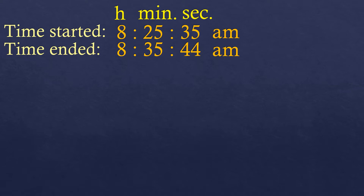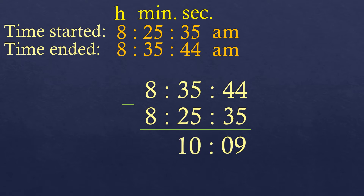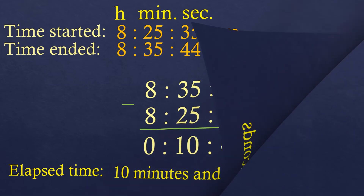To find the elapsed time, we subtract the time ended minus the time started. We write the time ended first and then below that the time started, and subtract from right to left — meaning from seconds to minutes to hours. So 44 minus 35 is 9, then 35 minus 25 is 10, then 8 minus 8 is 0. The elapsed time is 10 minutes and 9 seconds.